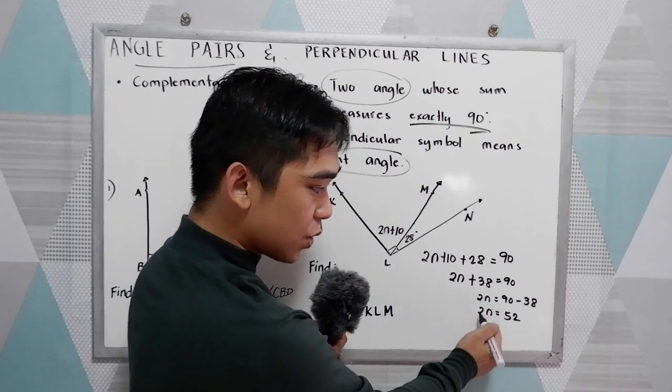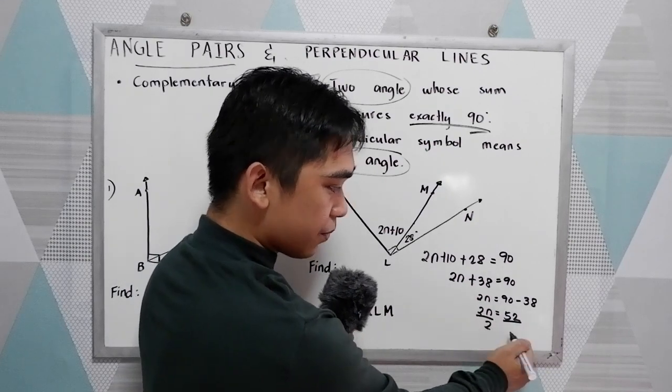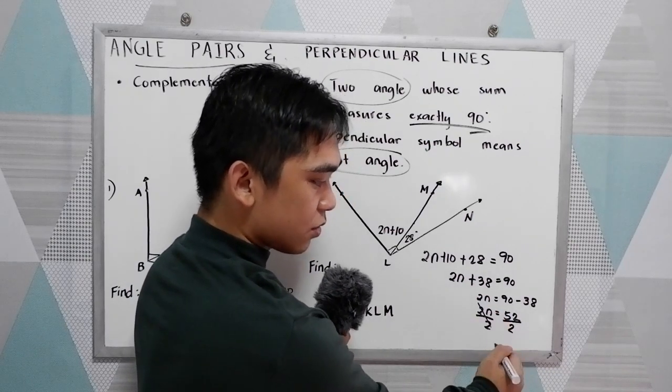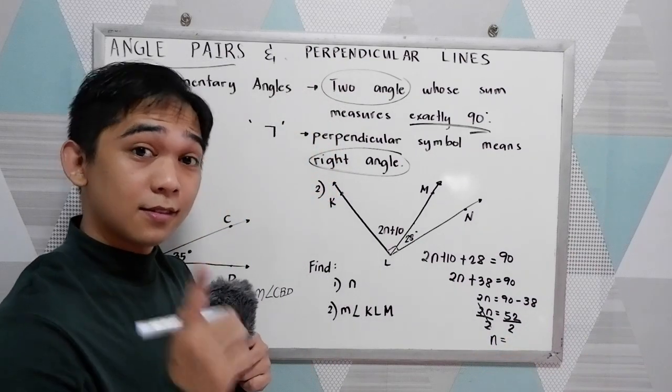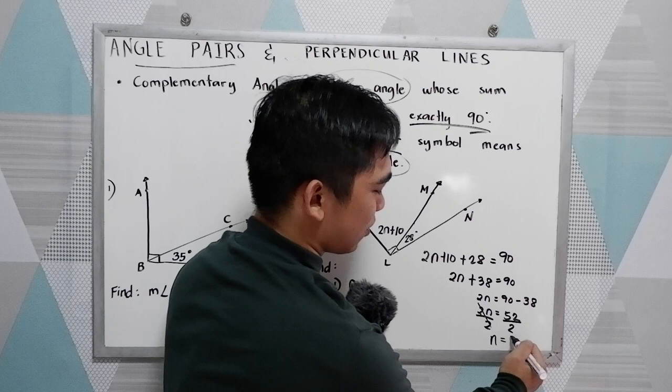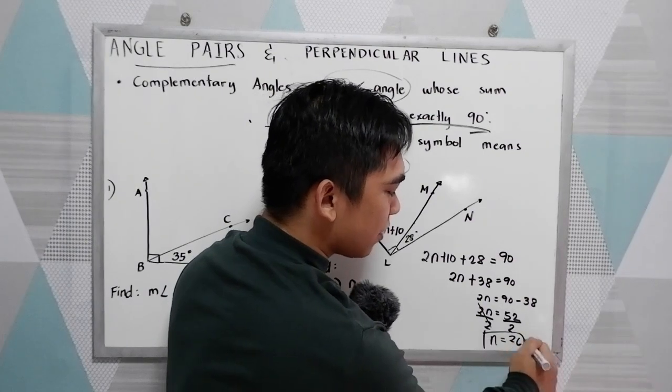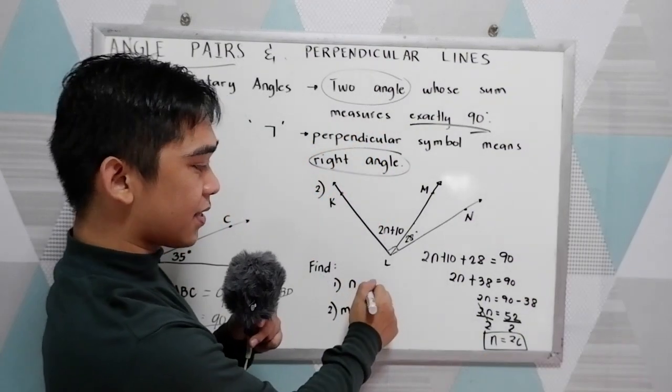Finally, to get N, we need to divide by 2. So our N is 52 divided by 2, which is 26. So the value of N is 26.